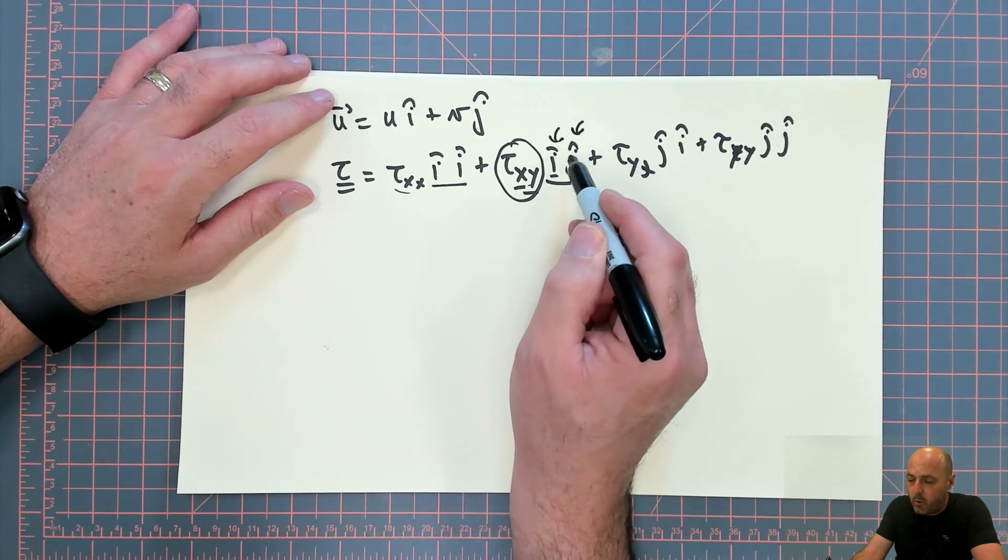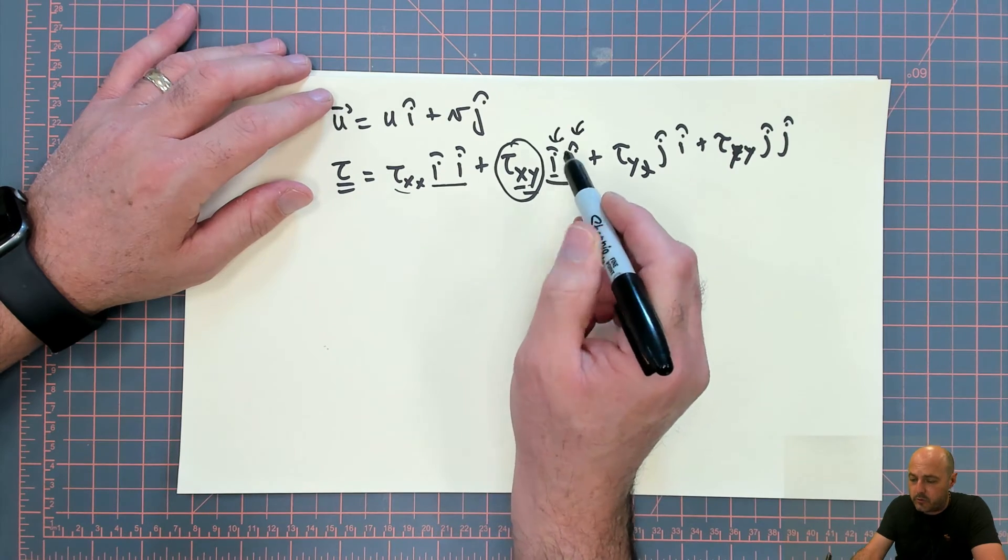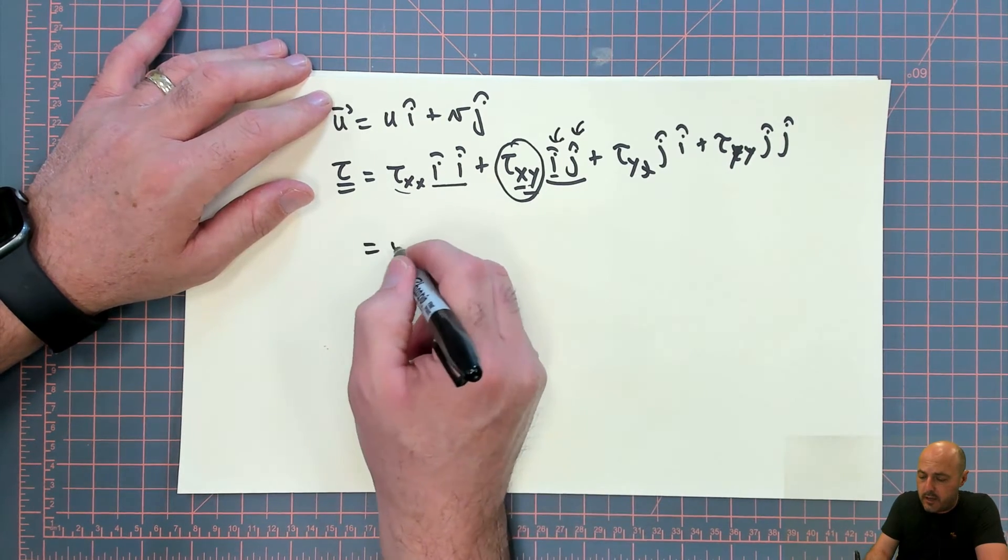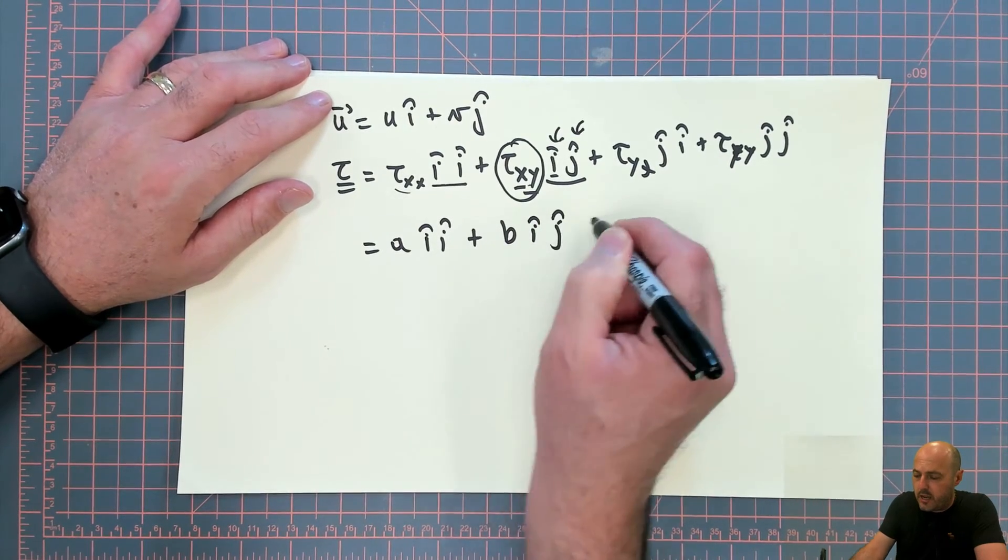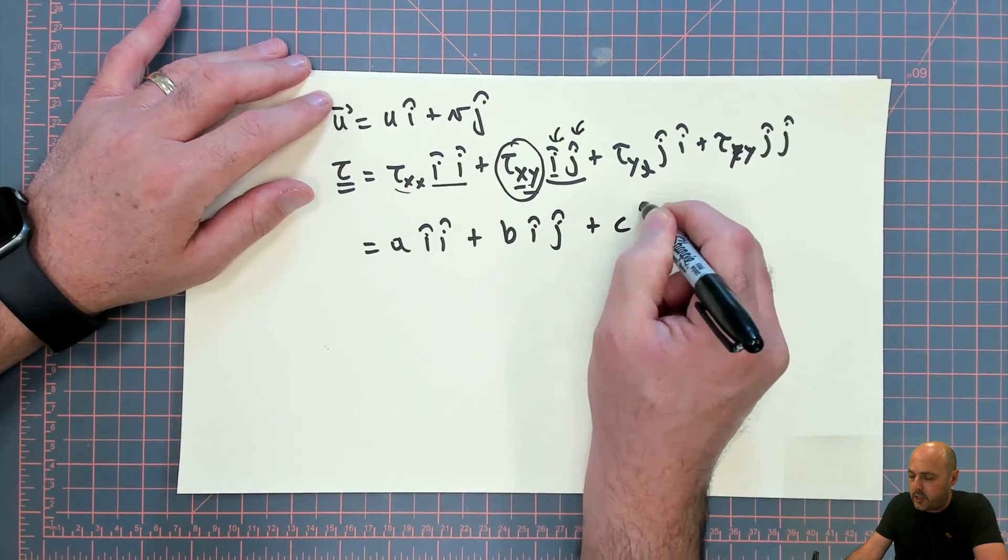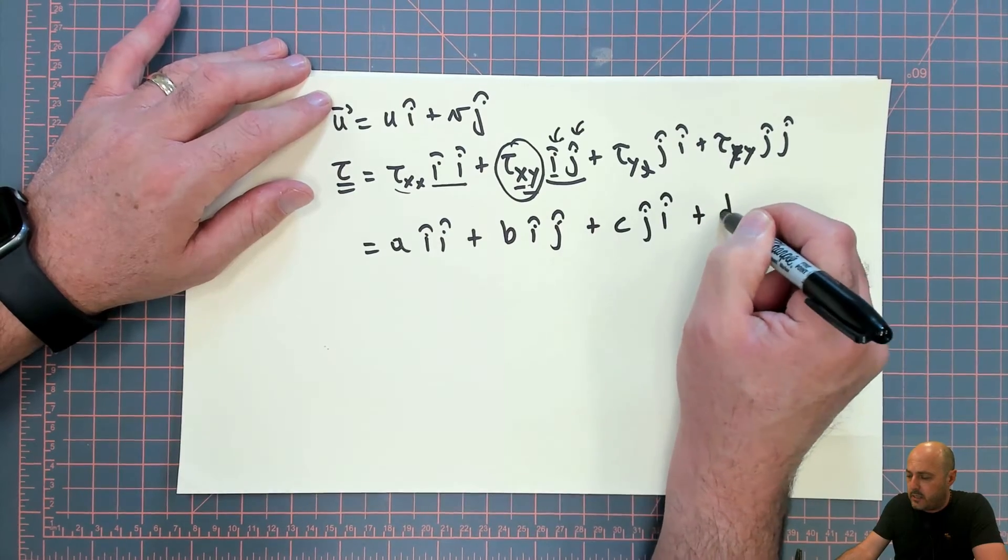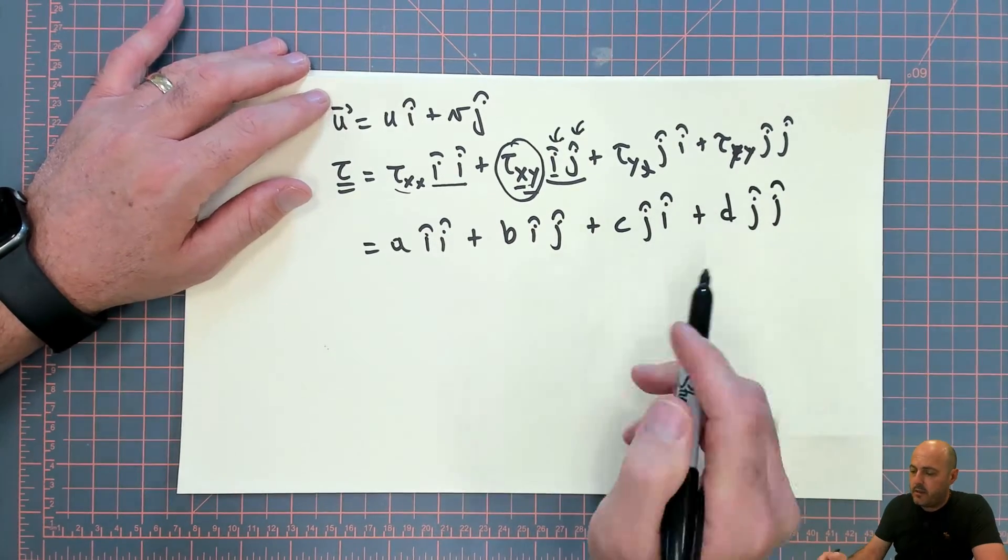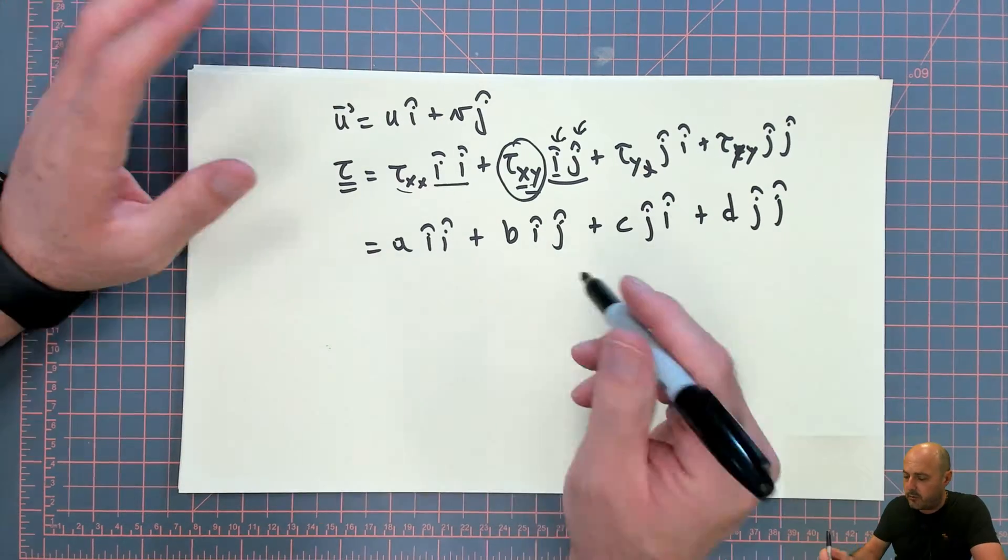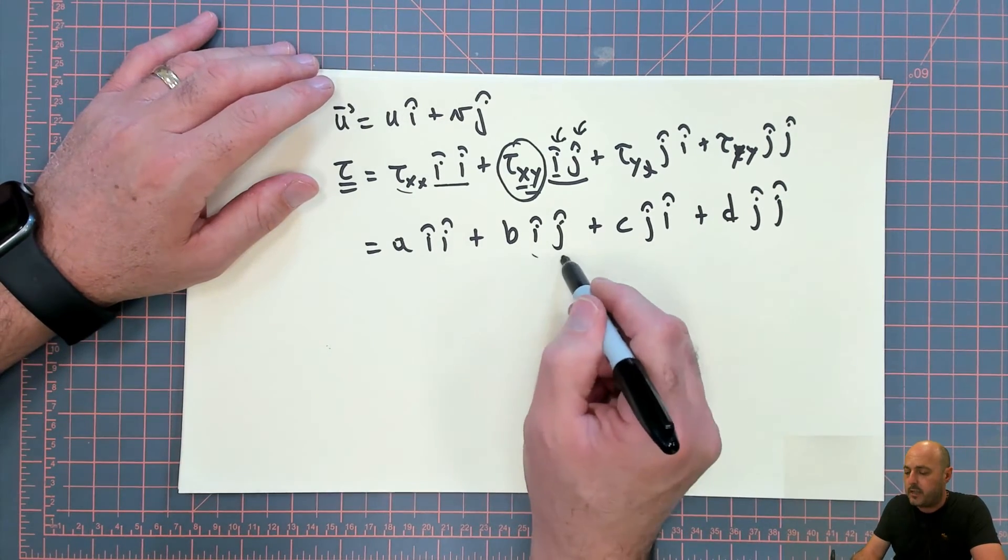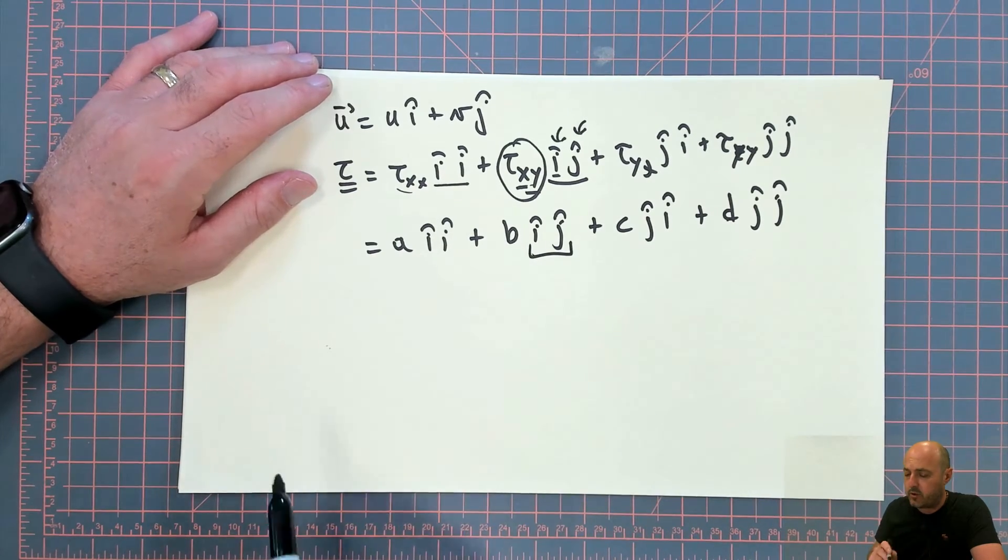The directional information only comes through these unit vectors over here. I might as well write the tensor as a ii plus b ij plus c ji plus d jj. Then the only way you could know which component belongs to what, which number belongs to what direction combination, what face and direction, is by looking at this unit vector combo.